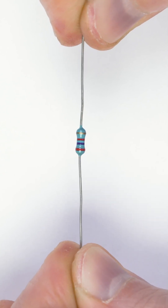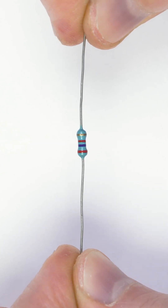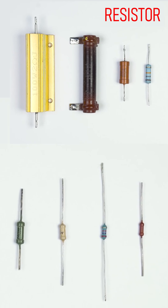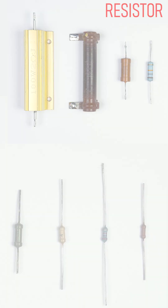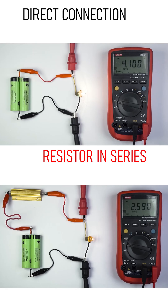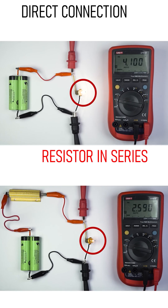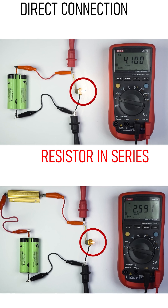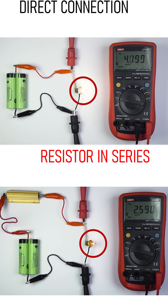The most common and simple component is the resistor. Its one and only function in an electrical circuit is to reduce current. Here we can observe two identical light bulbs powered by two identical batteries. One bulb is wired directly to the battery, while the other is in series with a resistor.